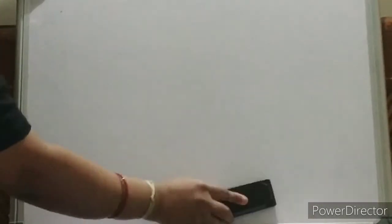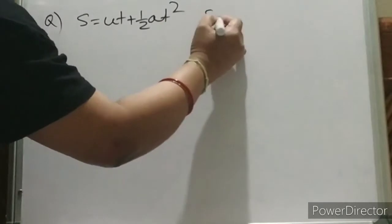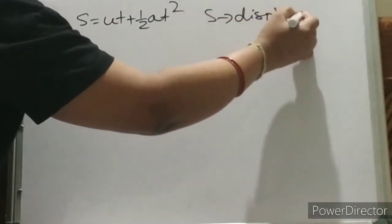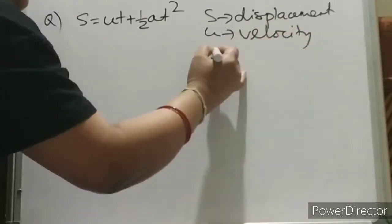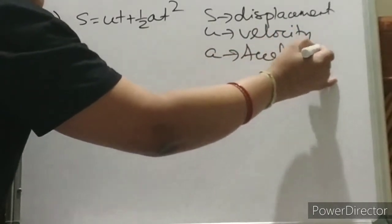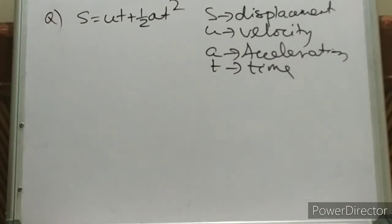The first example I am going to take is easy and is in all the books because you have seen this equation from 9th class. Check the correctness of the equation: S = ut + ½at². This is the equation of motion where S is displacement, U is velocity, A is acceleration, and T is time. You have to check the correctness of this equation, meaning this dimension, this dimension, and this dimension must all be equal.